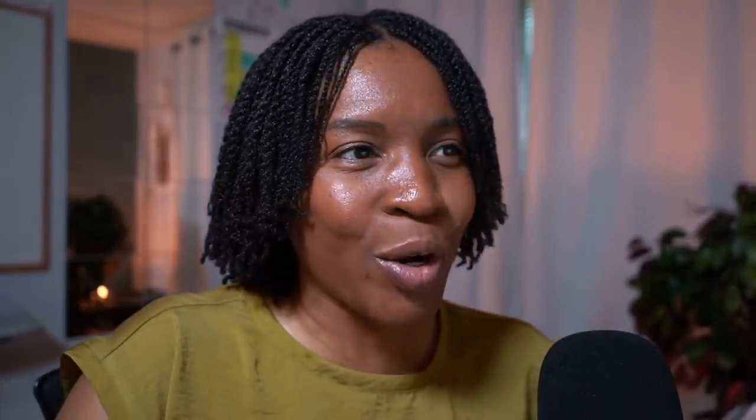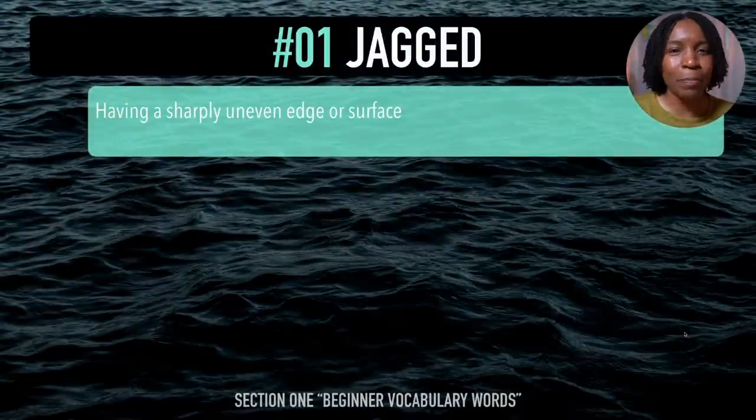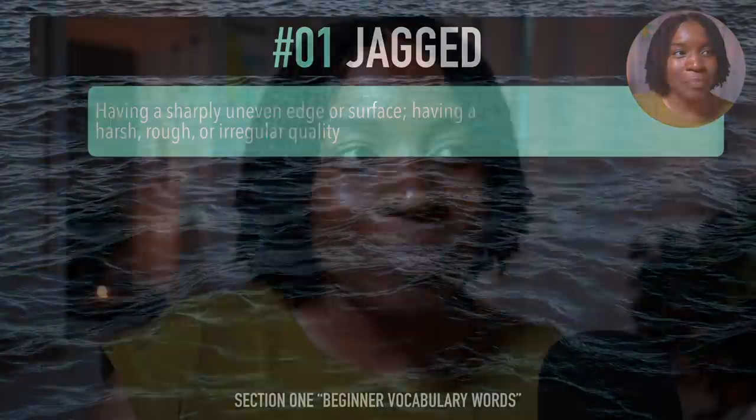Now let's jump into some beginner vocabulary words that use the 'juh' sound. In this section, we're going to go over 10 beginner English vocabulary words. The first vocabulary word is 'jagged'. After me — jagged. That kind of 'juh' sound, yeah? Jagged. Excellent.